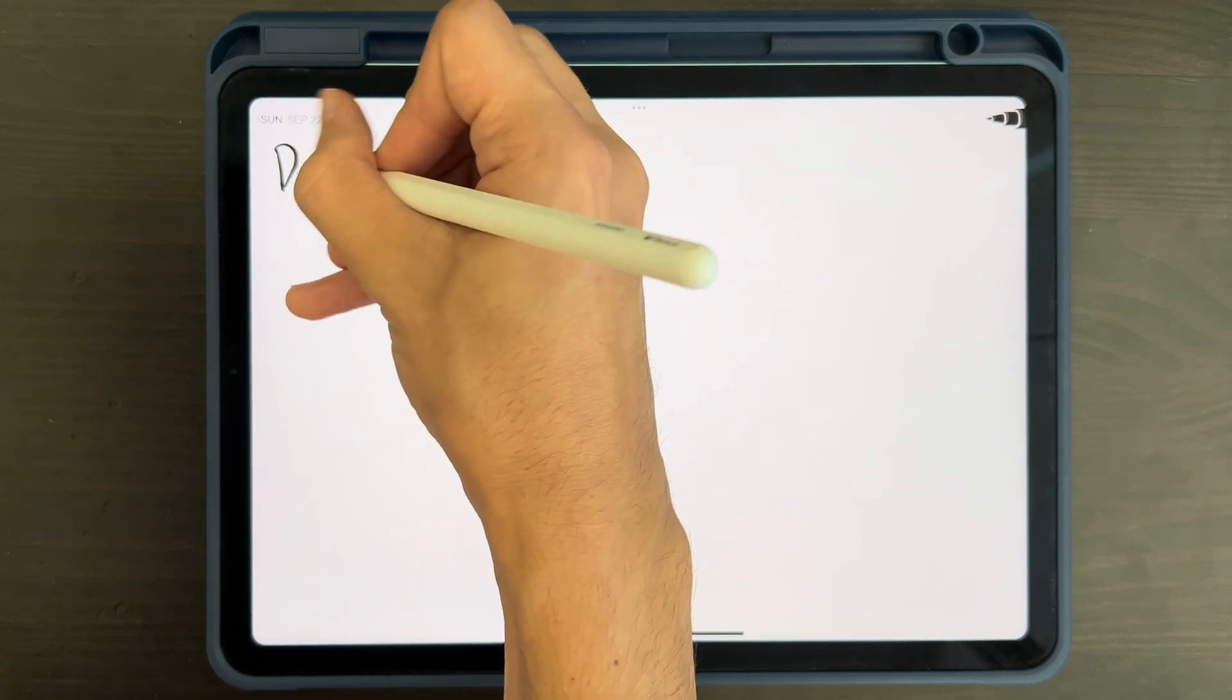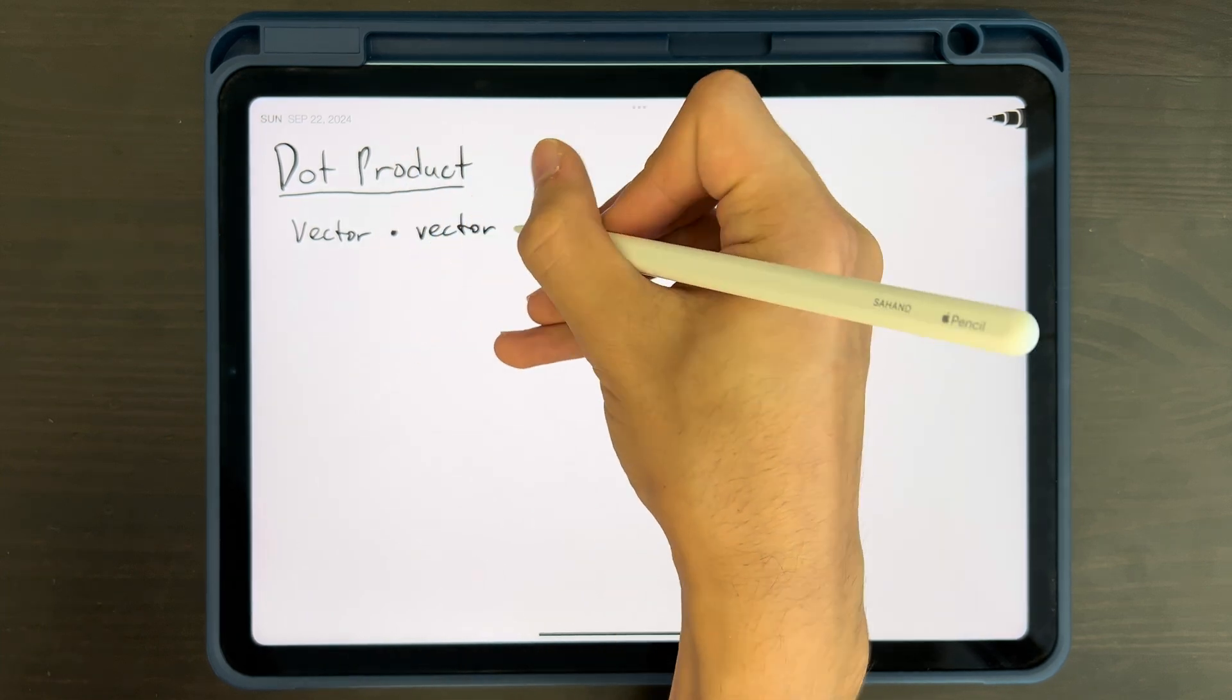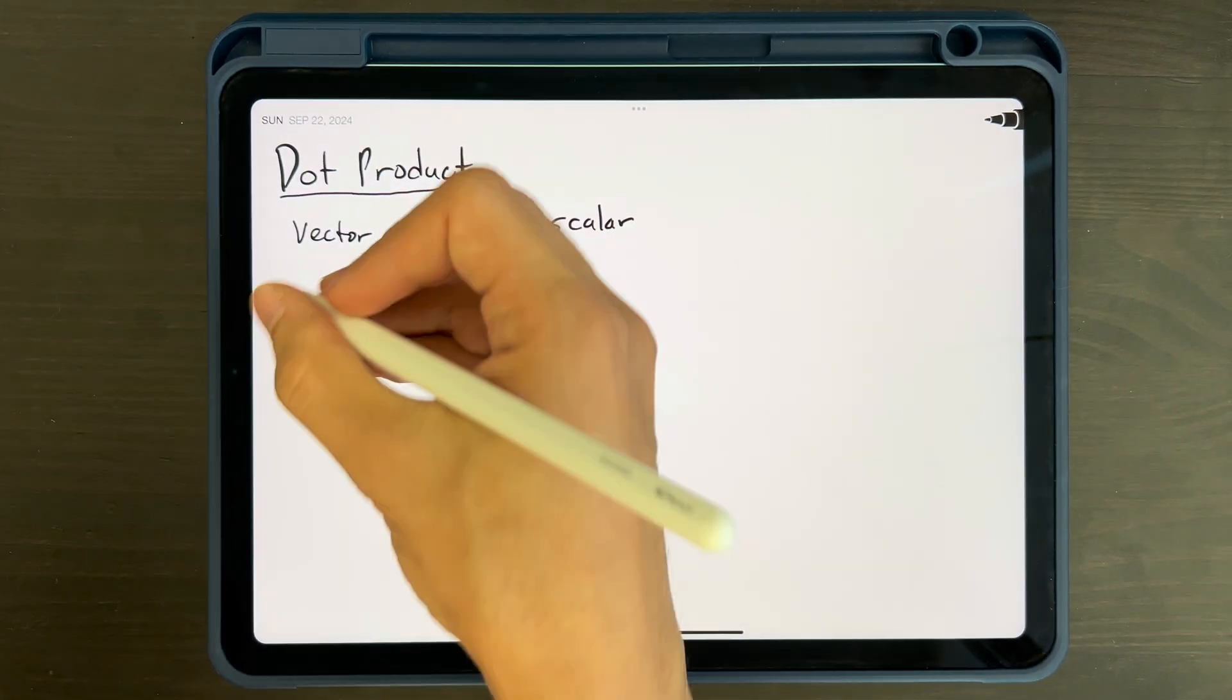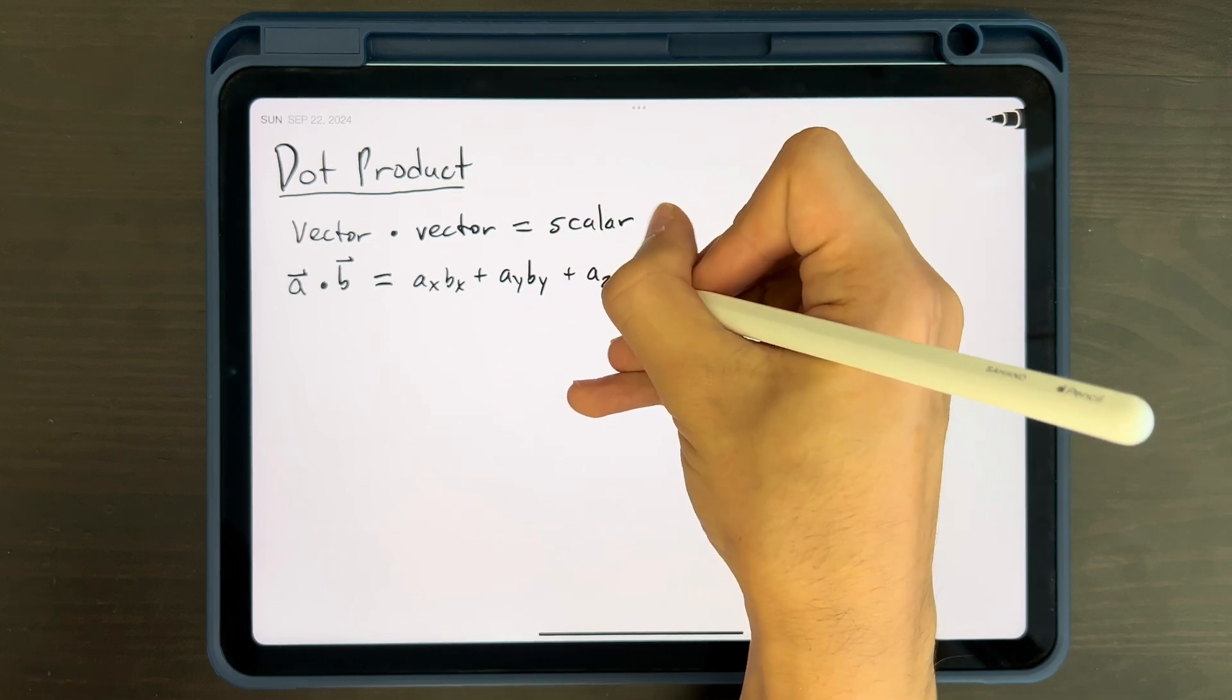First off, what's a dot product? Well, as many of you might know, a dot product is a way of multiplying two vectors to get a scalar. You take their components, multiply them element-wise, and then add up all those products.